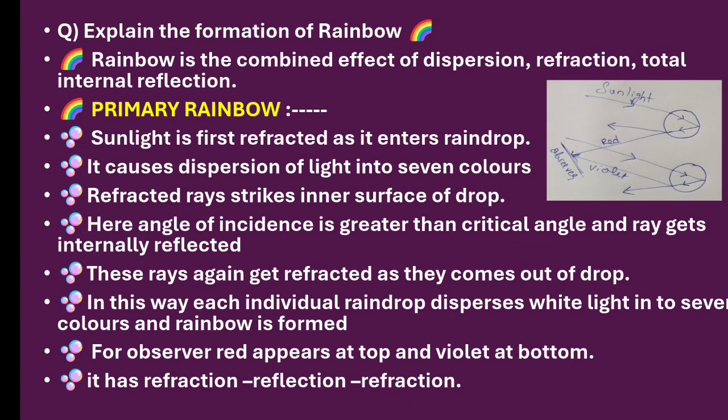The next question: explain the formation of rainbow. Rainbow is the combined effect of dispersion, refraction, and total internal reflection.